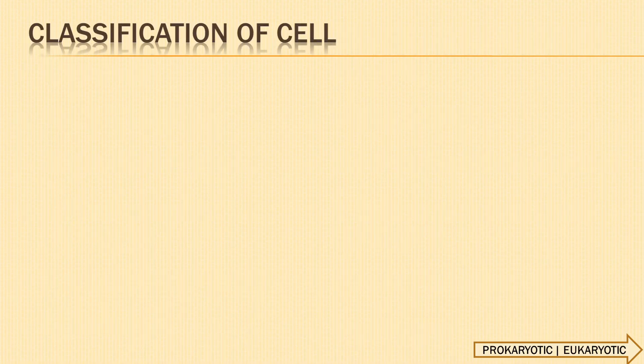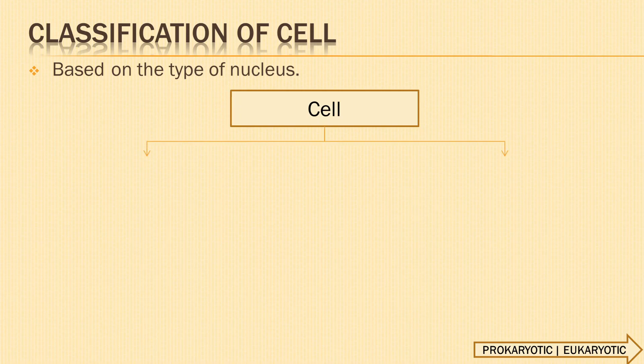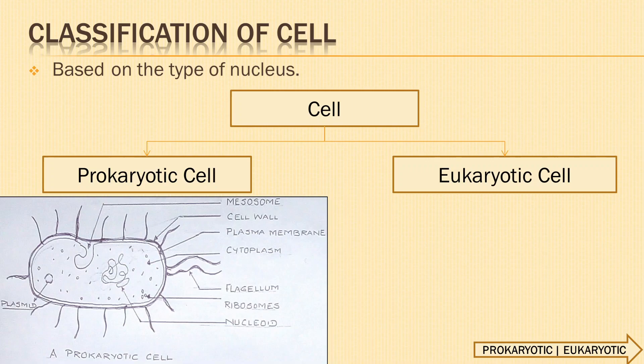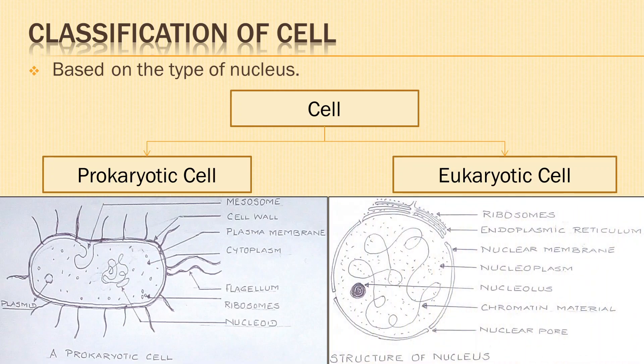Let's continue with the topic: classification of cells. Classification of cells can also be done based on the nucleus into prokaryotic cell and eukaryotic cell. Pro means primitive, karyon means nucleus. The nucleus region is not well defined and it is called nucleoid, as clearly labeled in the diagram of the prokaryotic cell. In the eukaryotic cell, you will find a well-defined nucleus. The parts of the nucleus are nuclear membrane, nucleolus, nucleoplasm, and chromatin material which later forms the chromosomes.